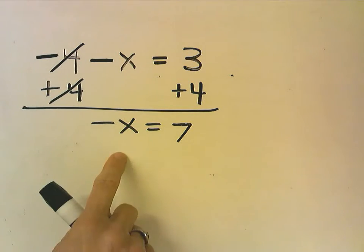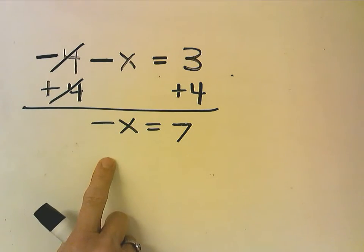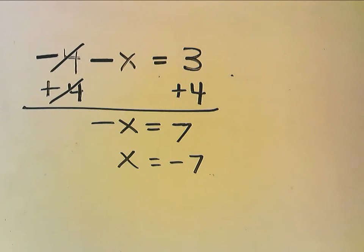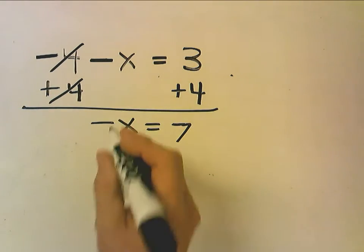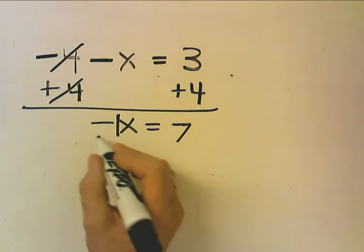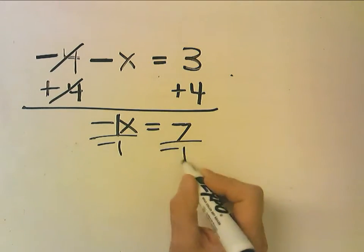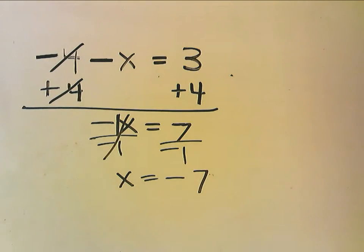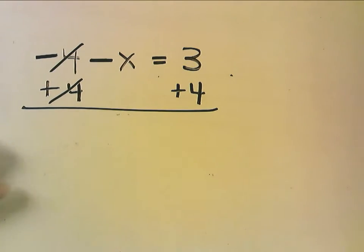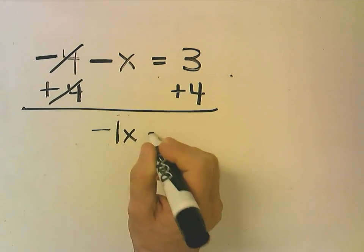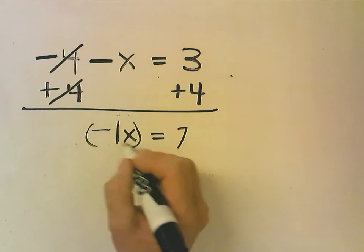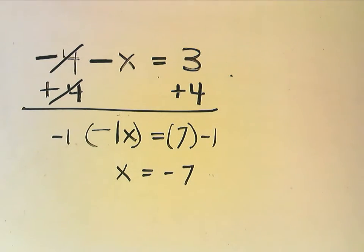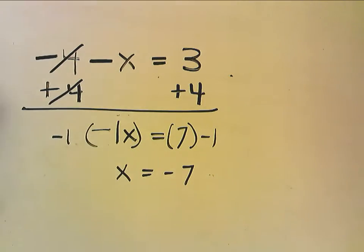Now there's different ways of approaching from here. You can think if the opposite of x is 7, then regular x is the opposite of 7, which is negative 7. Or you could say this is really negative 1x, so I'm going to divide both sides by negative 1. That cancels out, and we get x equals 7 divided by negative 1, which is negative 7. Or you could multiply both sides by negative 1. Either way, you get negative 7.